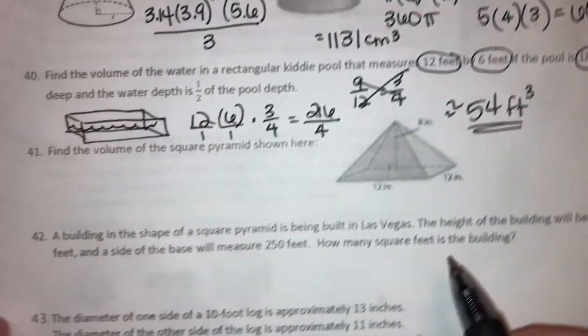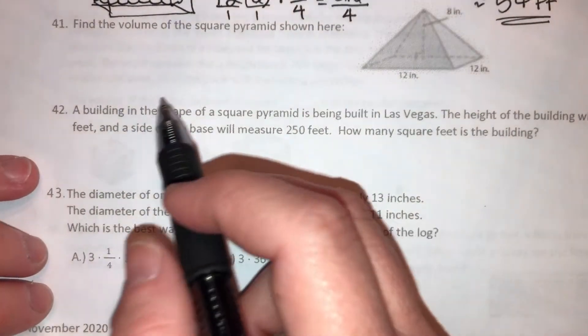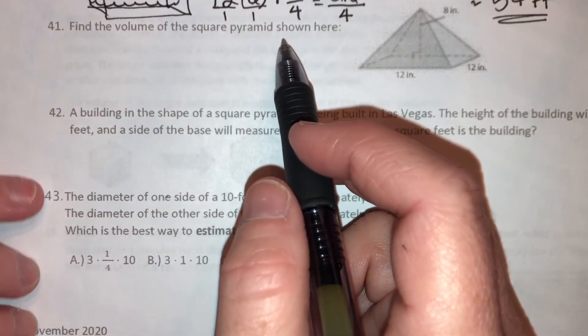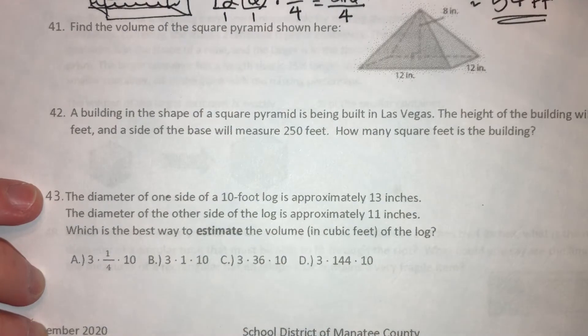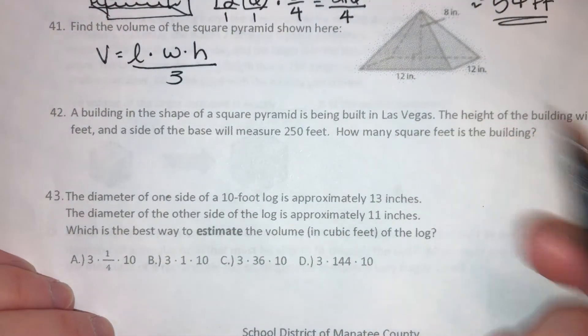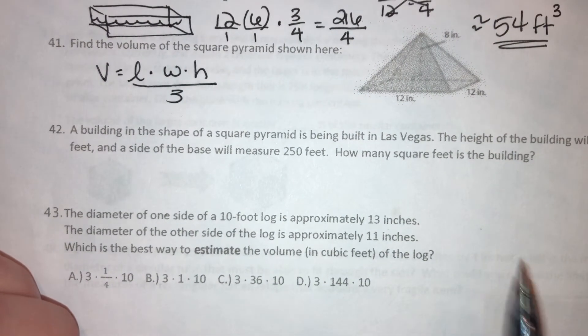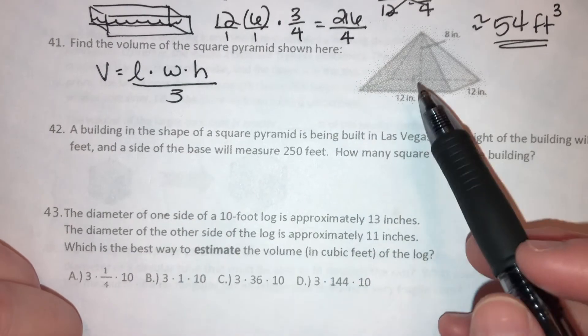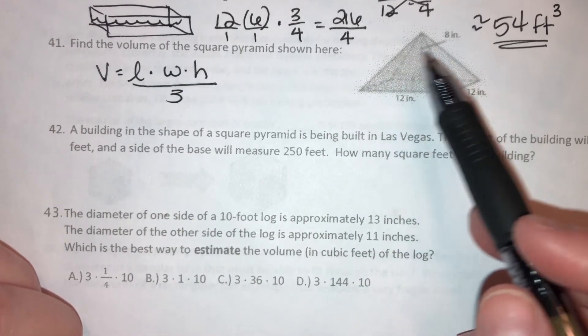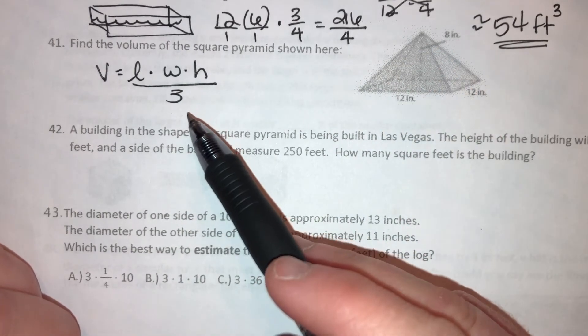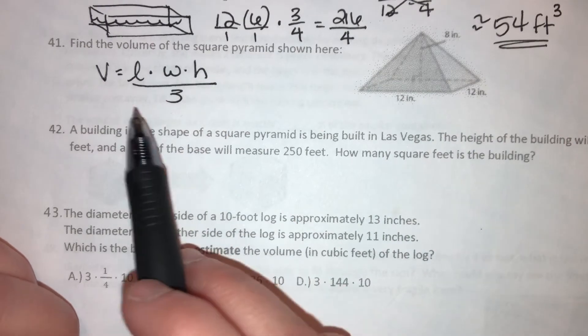All right, number 41. Find the volume of the square pyramid shown here. And volume of a pyramid is length times width times height divided by 3. Length times width times height divided by 3. There's no circles in here, so there's no need to use pi, right? For a cone and a cylinder, we use pi because we had circular bases. Here we don't have a circular base. So it's kind of like a cone. You find the area, and then you divide it by 3. You just don't have pi involved. Okay, so length times width times height.